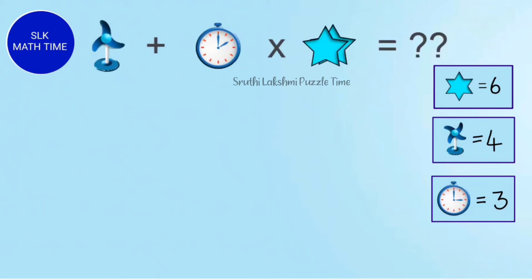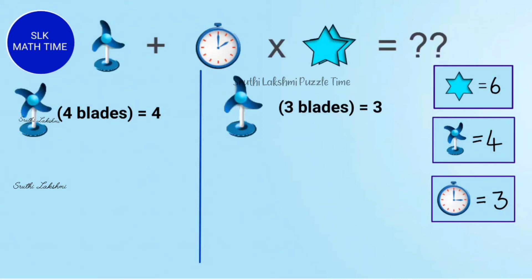Now let's see the fourth equation, which is fan plus clock into 2 stars. So do you notice something different? The last time we saw a fan, it had 4 blades. But this time, this fan has 3 blades. And when the fan had 4 blades, its value was 4. So that means if the fan has 3 blades now, the value must be 3.